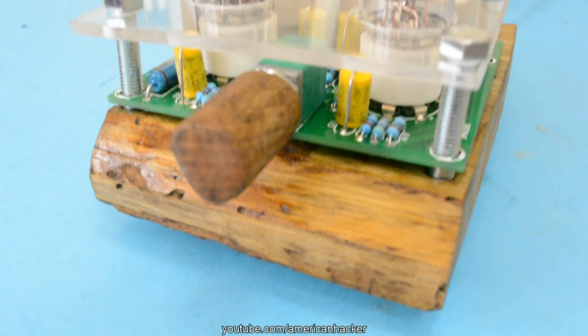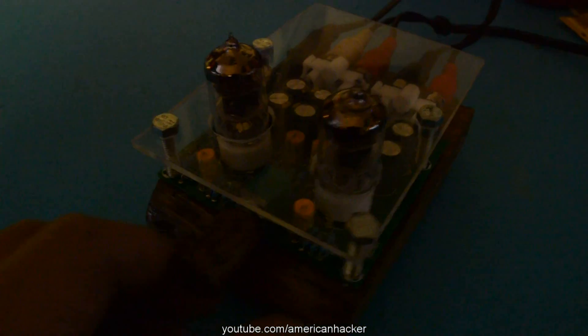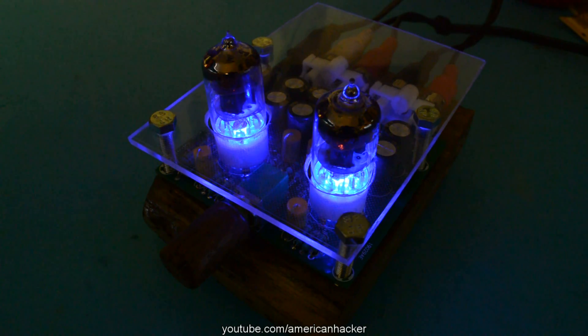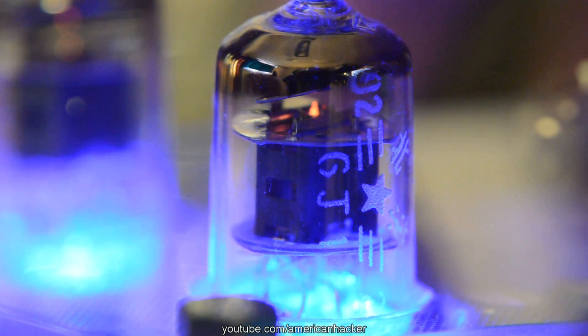Once again, this tube preamplifier looks pretty awesome guys. Don't forget to hit that like button. Two preamplifier kits you can buy from eBay or Amazon for about 40 bucks.